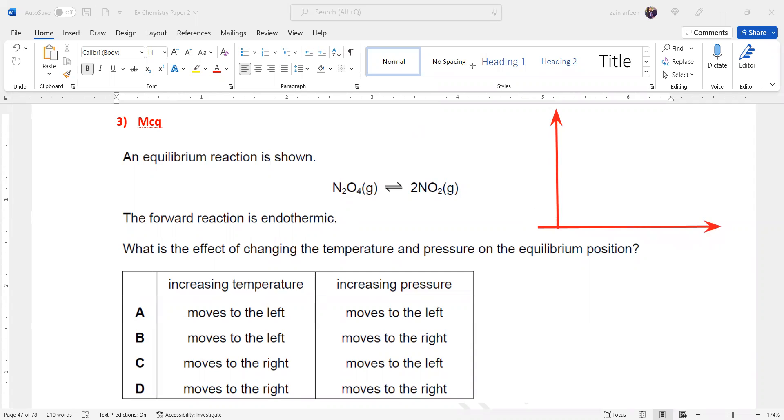In an endothermic reaction, the reactants have low energy and the product has high energy. So N2O4 will have low energy while 2NO2 will have high energy. First, we are increasing temperature.